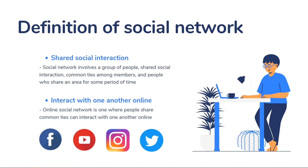A social network involves a group of people who share social interaction, common ties among members, and who share an area for some period of time. An online social network is one where people who share common ties can interact with one another online. Examples include Facebook, Twitter, and Instagram. In general, it is a group of people who may or may not meet face to face — they talk and exchange everything through social media.